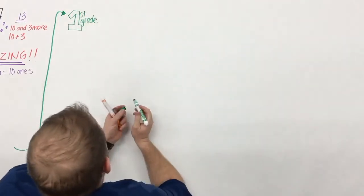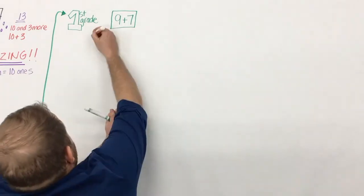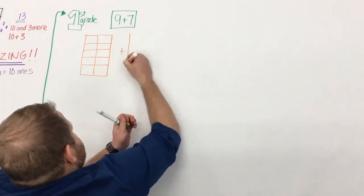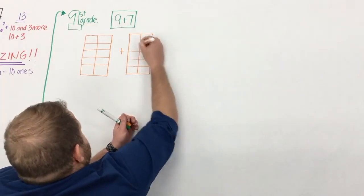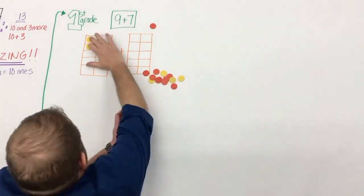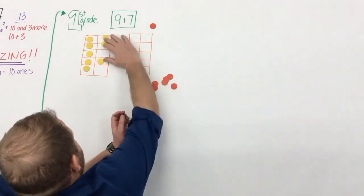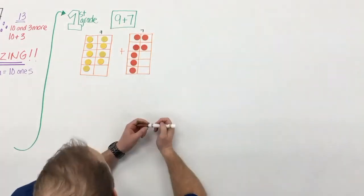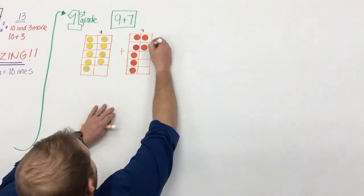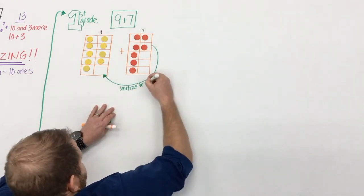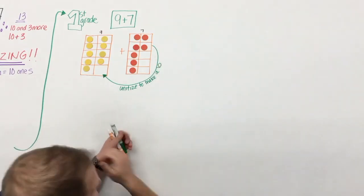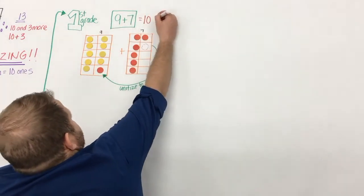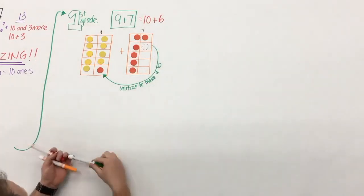So as students dive into first grade, they begin to explore sums greater than 10. So what might that look like? Well, here, a student can take nine plus seven, model it with a 10 frame. And because they've worked on this idea of unitizing, or they're beginning to, they know that it's most efficient to fill up a 10 frame. So they take one from the seven, give it to the nine to make a 10, and they're left with six.